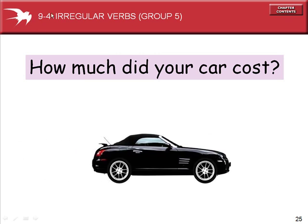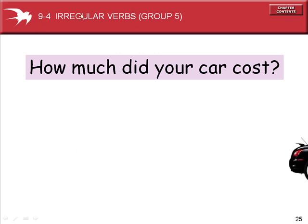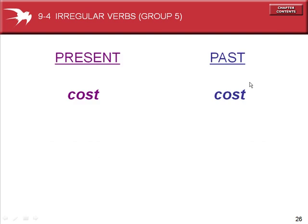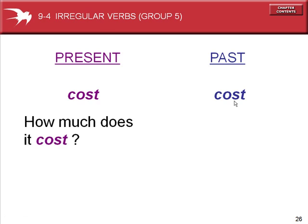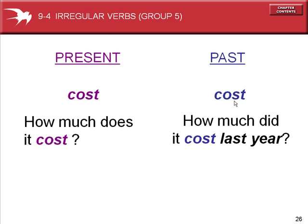Section 94: Irregular Verbs. How much did your car cost? The present tense is 'cost' and the past tense is 'cost.' How much does it cost? Present tense. How much did it cost last year? Past tense.